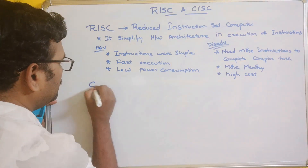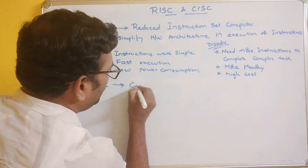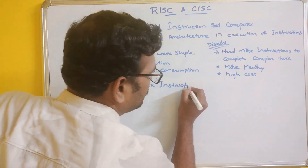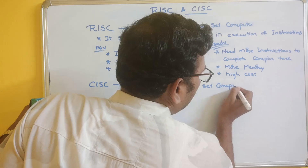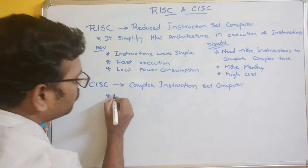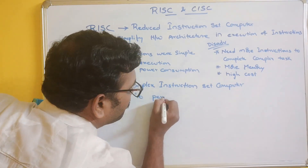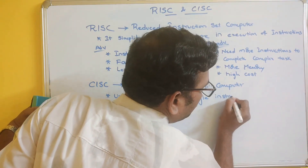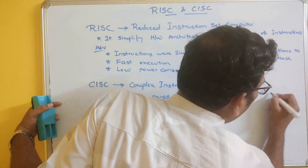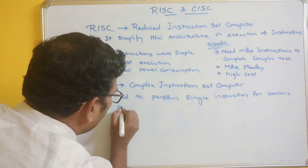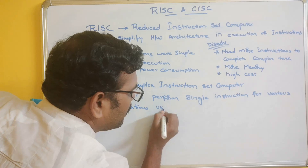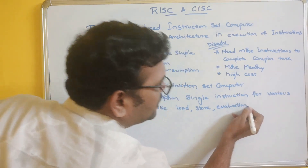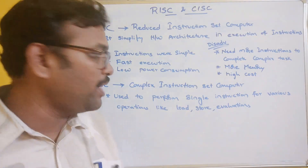Coming to the other architecture, CISC — Complex Instruction Set Computer. Here it is mainly used to perform a single instruction for various operations like loading, storing, and evaluating. For all these operations it requires only a single instruction.